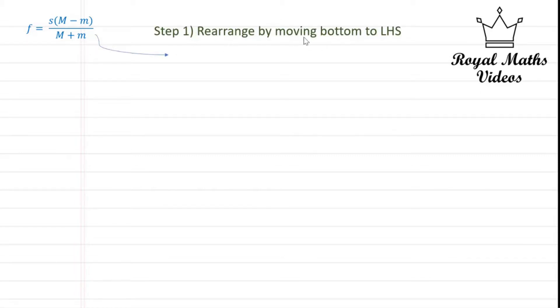So step one would be to rearrange by moving the bottom of the formula to the left hand side. This is in order to balance the equation out and to make life just a bit more easier.